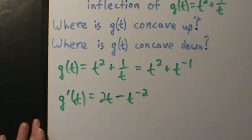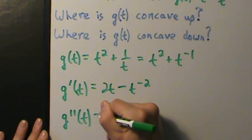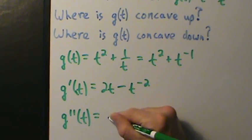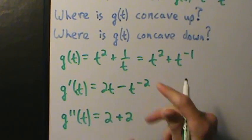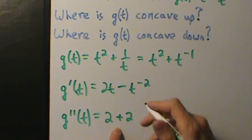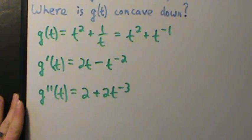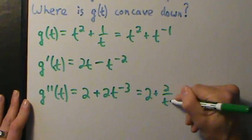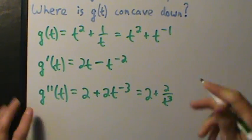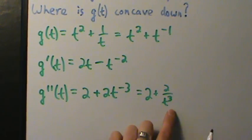So now we want the second derivative. g double prime of t: the derivative of 2t is 2, and then minus t to the negative second gives minus negative 2 t to the negative third, which is plus 2 t to the negative third. So let's rewrite that as 2 plus 2 over t cubed.